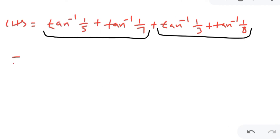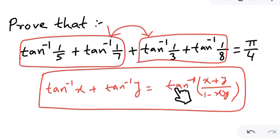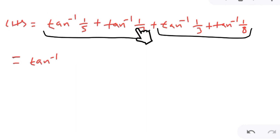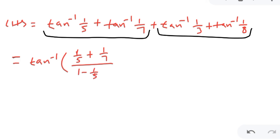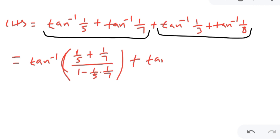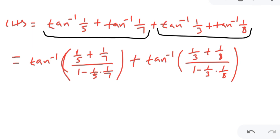Applying the formula on the first two terms gives tan inverse of (x + y) / (1 − xy), and I apply the same formula on the second two terms — tan inverse 1/3 plus tan inverse 1/8 — giving tan inverse of (x + y) / (1 − xy) for those as well.